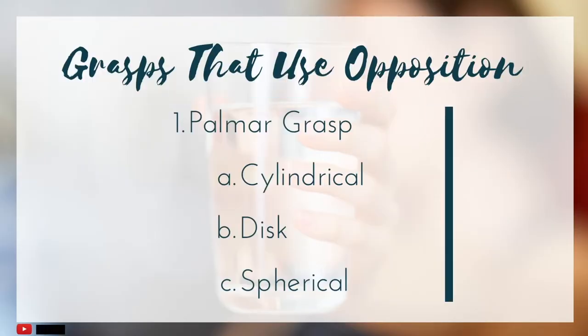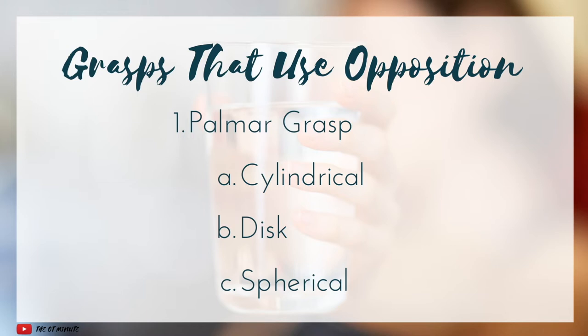Now let's look at a few common grasp patterns that include opposition. First we have the palmer grasp, which can include a few different subcategories of grasps, including the cylindrical, disc, and spherical grasp. In general, the name suggests the shape of the object that the hand is trying to hold.